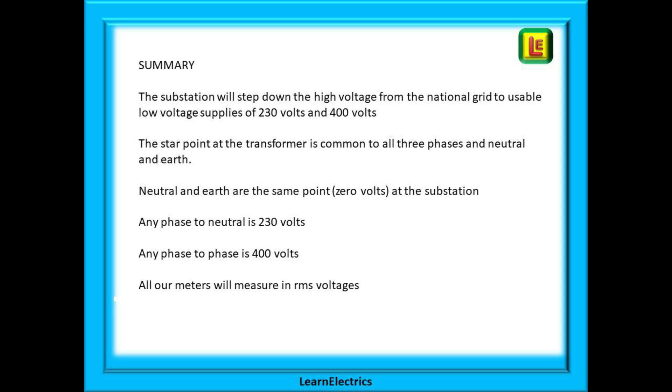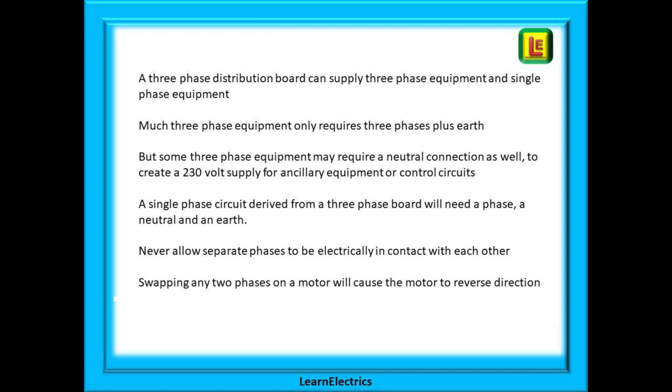Remember also that our test meters will measure in RMS voltages. A three-phase distribution board can supply three-phase equipment and single-phase equipment. Much three-phase equipment only requires three phases plus earth. But some three-phase equipment may require a neutral connection as well to create a 230 volt supply for ancillary equipment or control circuits. A single-phase circuit that is derived from a three-phase board will need a phase, a neutral and an earth. Never allow separate phases to be electrically in contact with each other. And swapping any two phases on a motor will cause the motor to reverse direction.